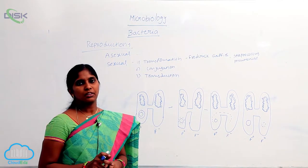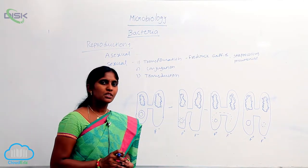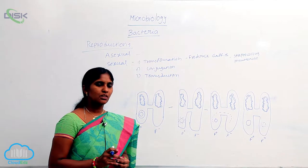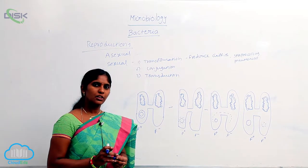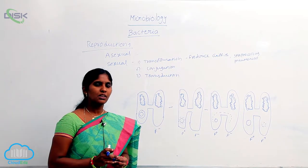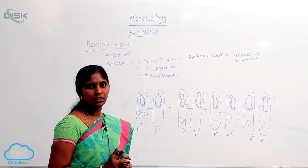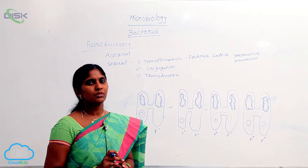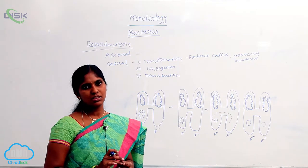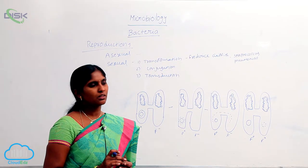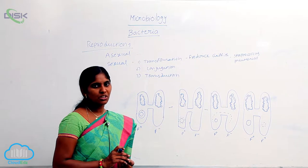Sexual reproduction of bacteria. True sexual reproduction is absent here, but the segment of genetic material has been transferred from one bacterium to another bacterium. So genetic material exchange takes place here, and that leads to genetic recombination.